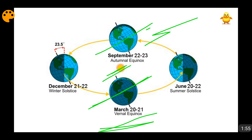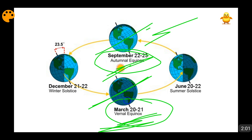This is Autumnal Equinox on September 22–23, and this is Spring or Vernal Equinox on March 20–21. This Spring or Autumn labeling will change according to the hemisphere when we talk about the seasons, but here we are talking about just Equinox.